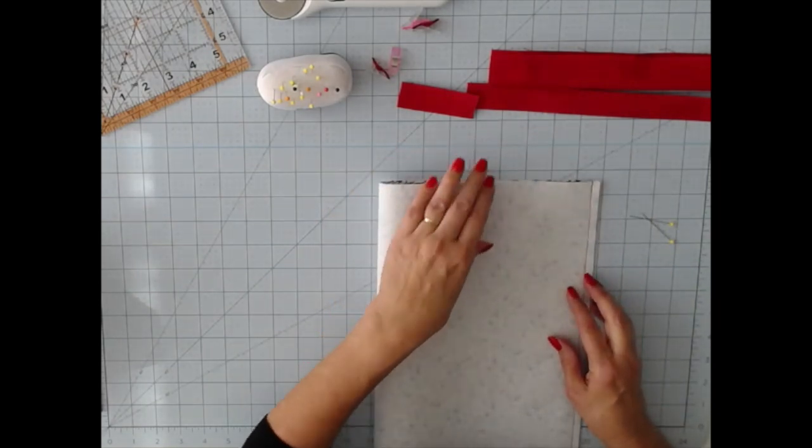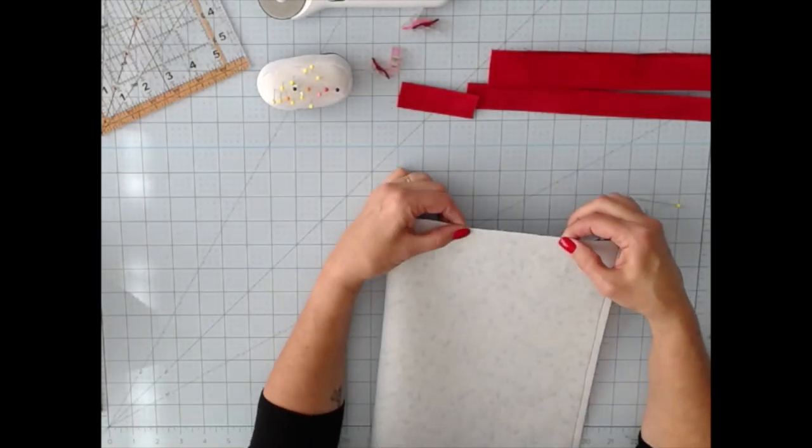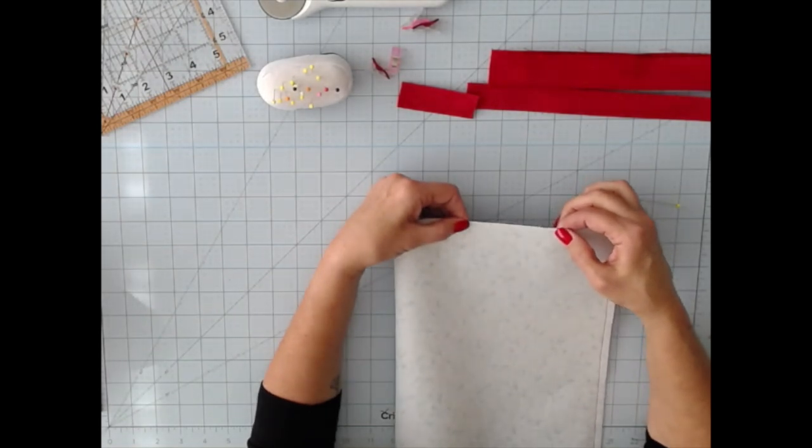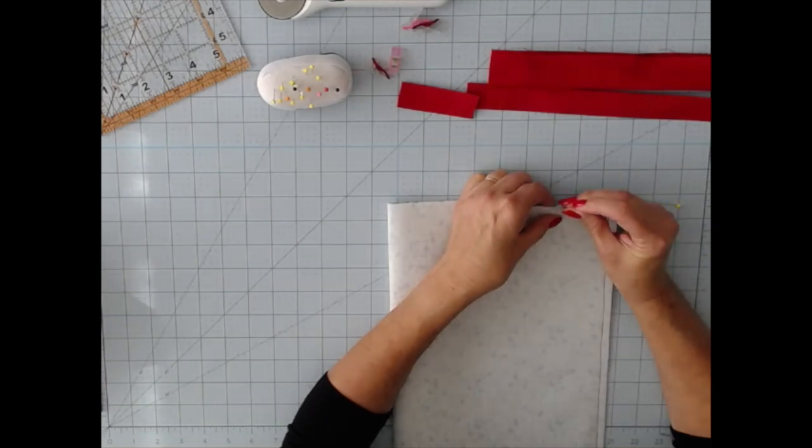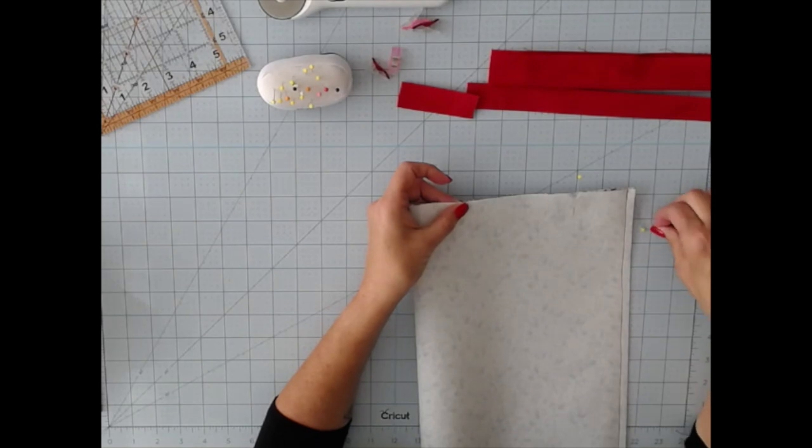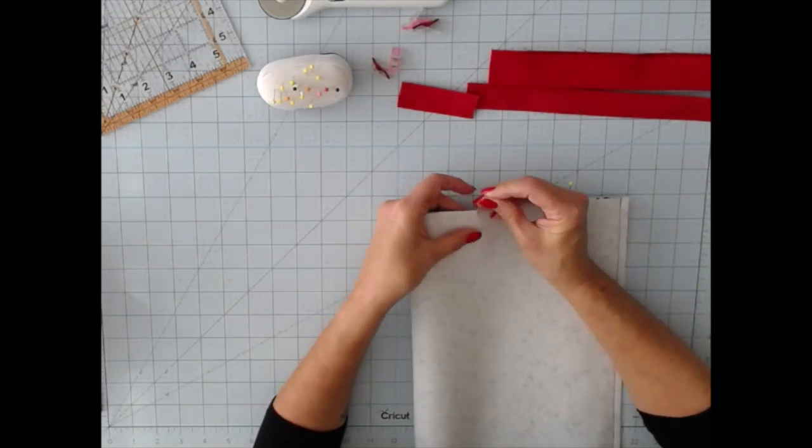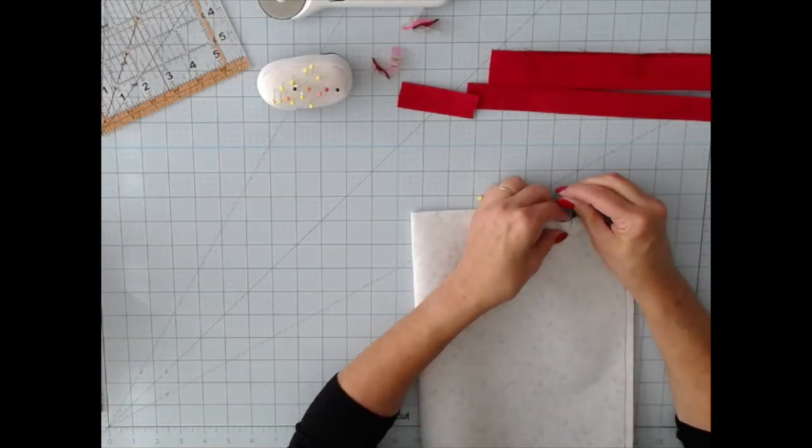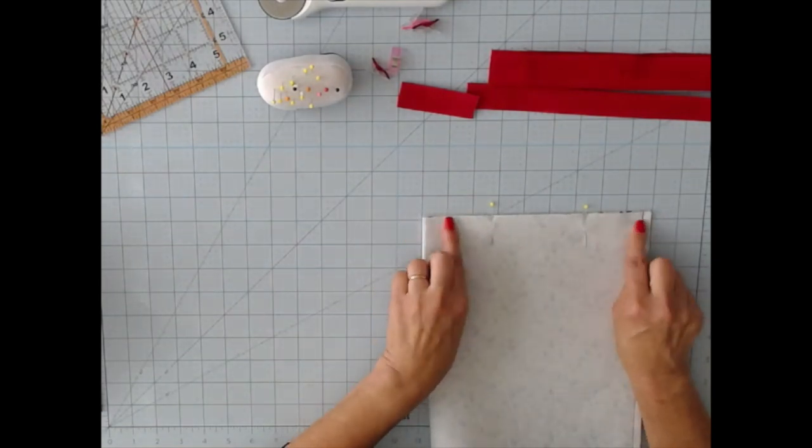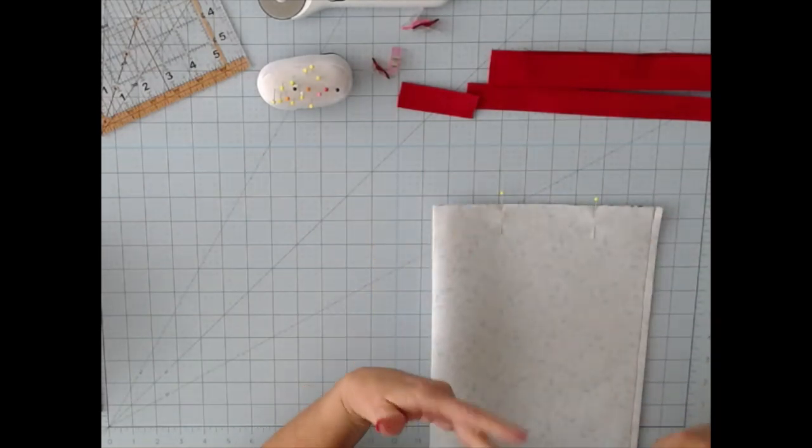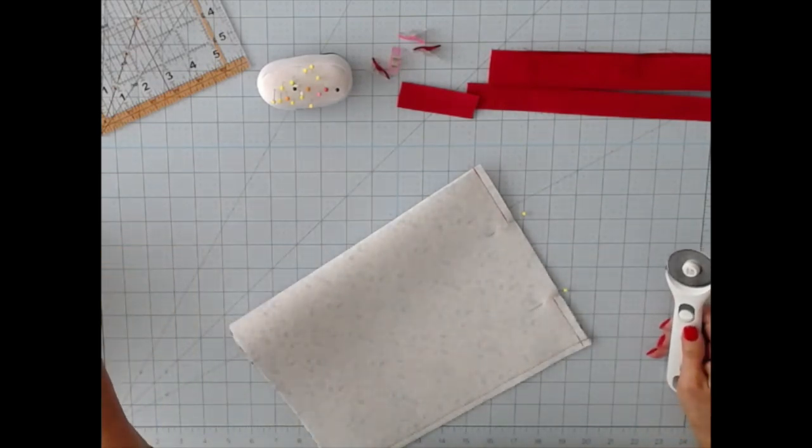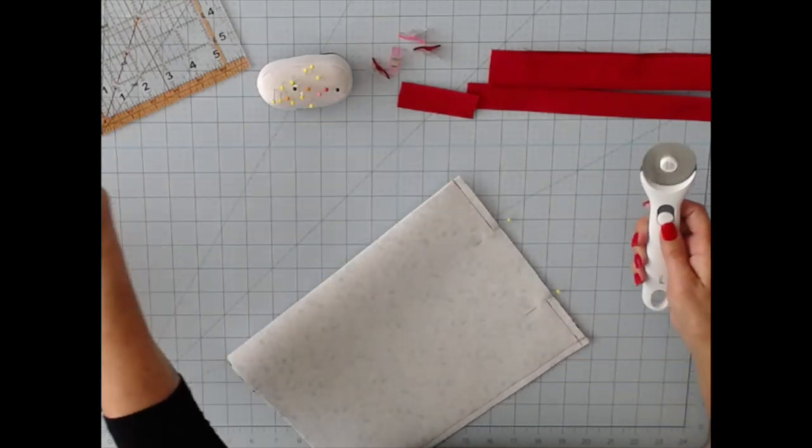The next thing we're going to do is sew across the top. But you want to leave a space because this is actually going to end up being the back. So you want to leave a space open wide enough to add your filler, whether using rice or beans or whatever it is. So the original project that I saw called for about a two inch space, but I found that was a bit tight when you're trying to add your filler. So I'm going to leave mine a little wider, maybe about three inches. So we're going to sew straight out and straight out. Don't forget to backstitch because you don't want to have your seams pull apart when you're turning it right side out or when you're filling.